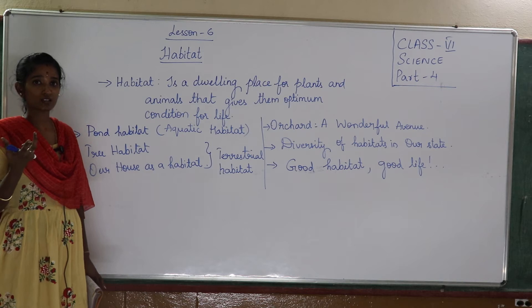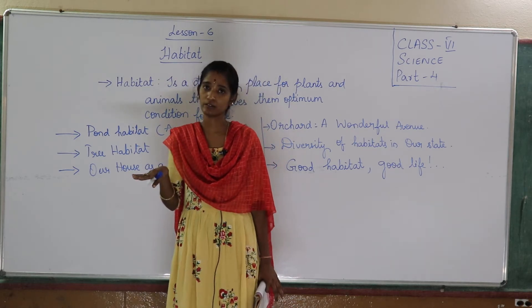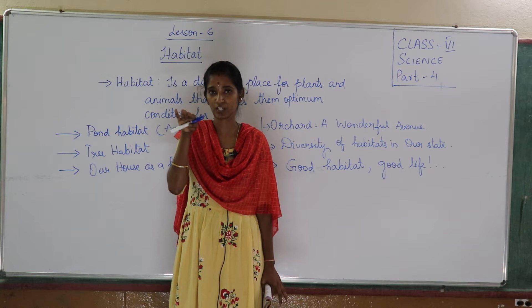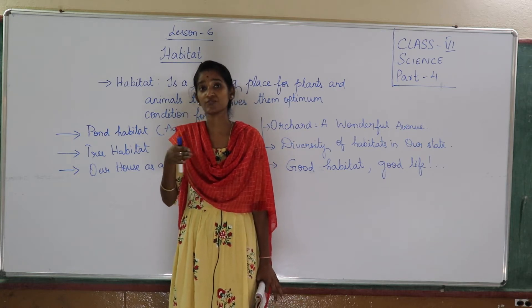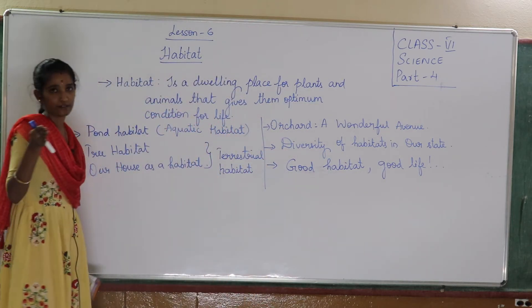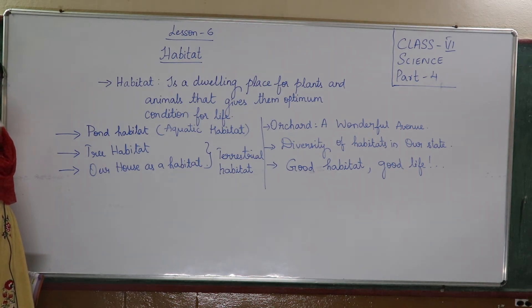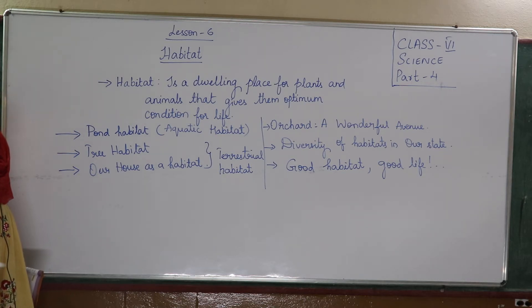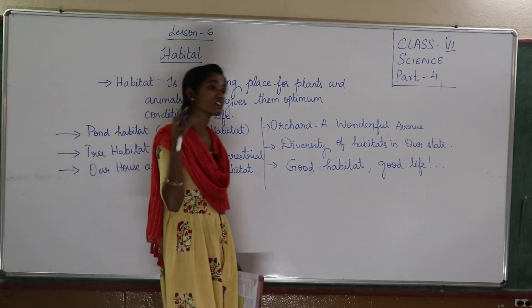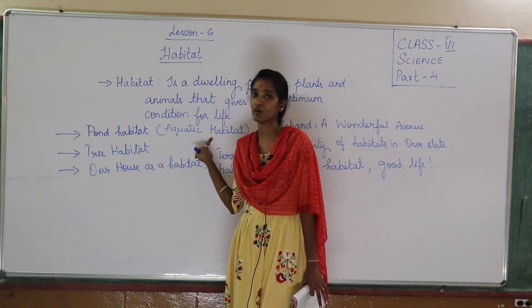When you see pond habitat — a pond is water. There are few animals which live inside the water, underground the water, in the middle of the water, and at the top layer of the water. There are also few plants which live inside the water. The animals or plants living inside the water, we call it as aquatic habitat — that is aquatic plants or aquatic animals.